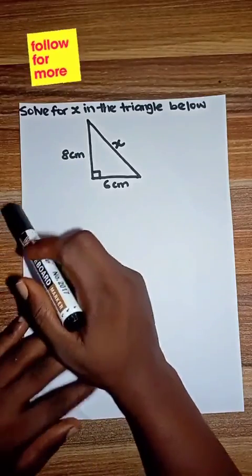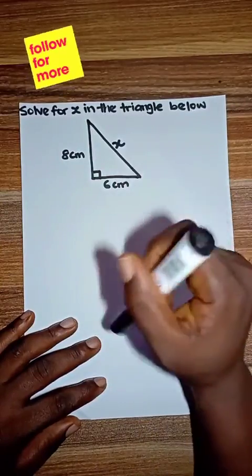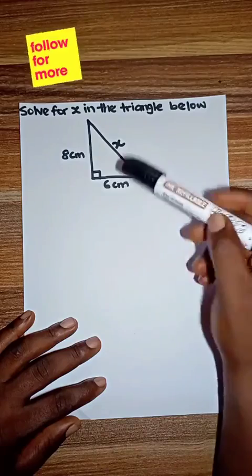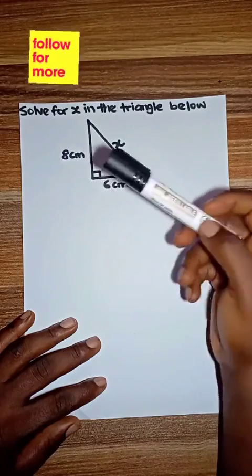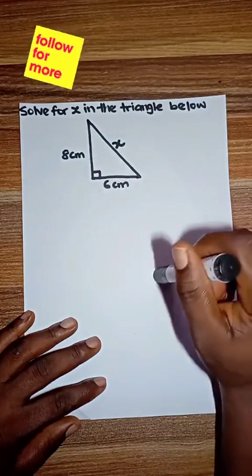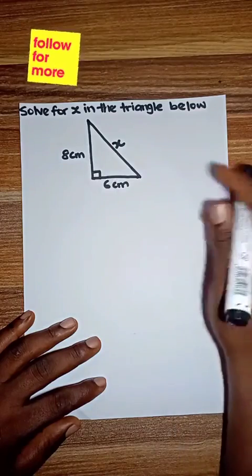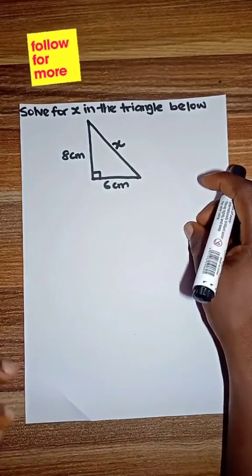Alright guys, let's look at this simple question here: solve for x in the triangle below. This triangle is given. First thing we need to check is what kind of triangle is this? From our observation, we can see that this is a right-angle triangle because one of its angles is 90 degrees.